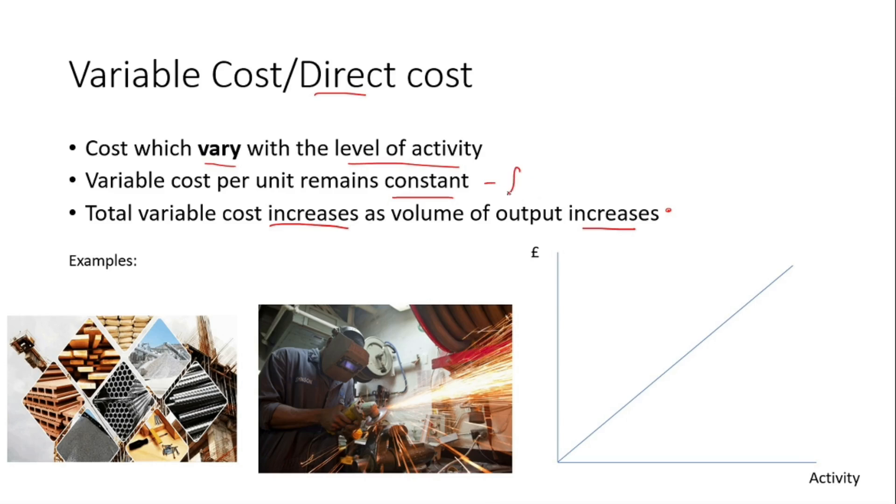For example let's say we've got 5 pounds for materials. If we've got 50 units we bought, then we're going to have to pay 250 pounds of variable cost of materials. But let's say we've got 1000 units of them, we're going to have to pay 5000 pounds of variable cost.